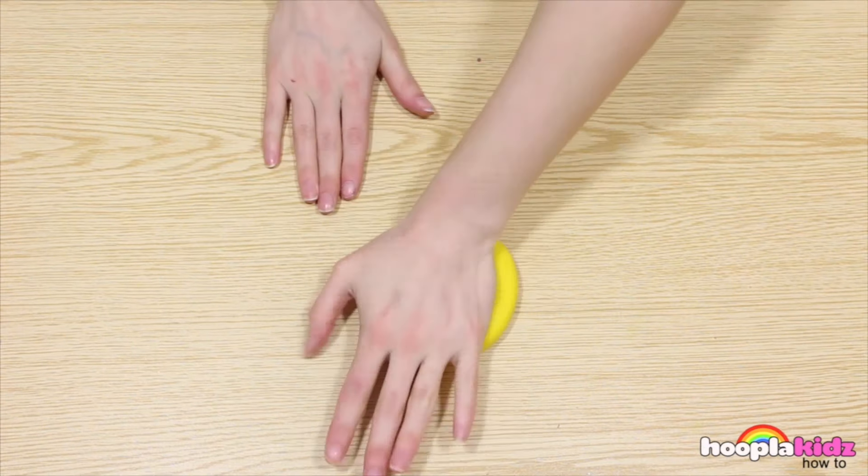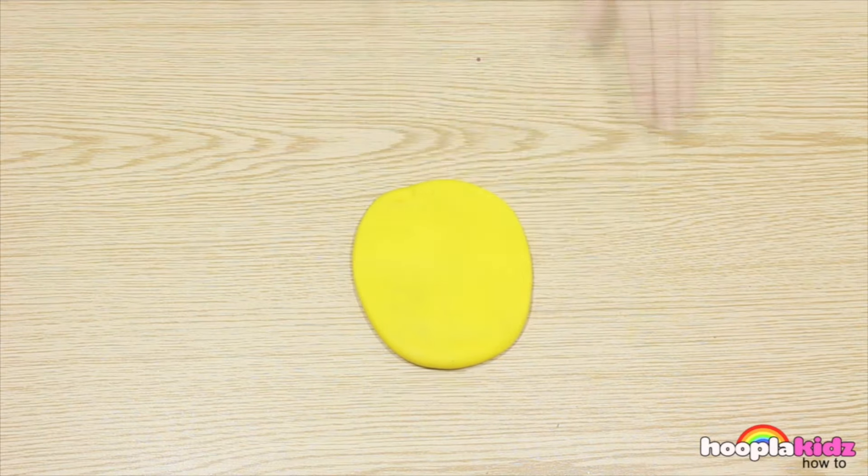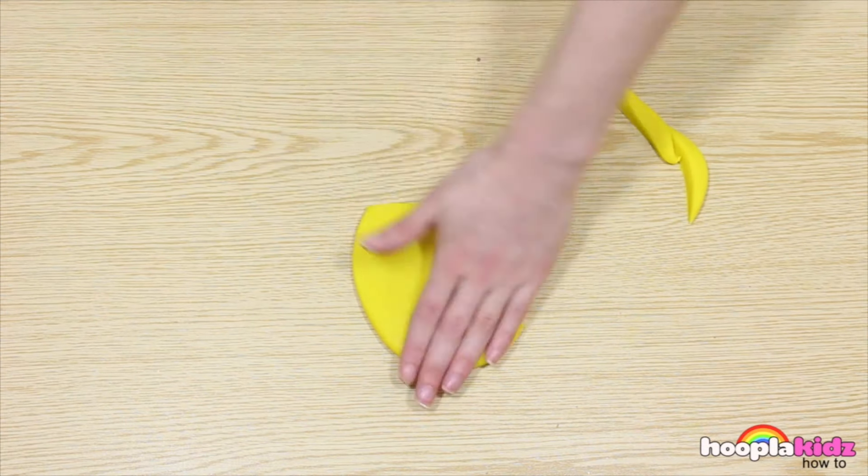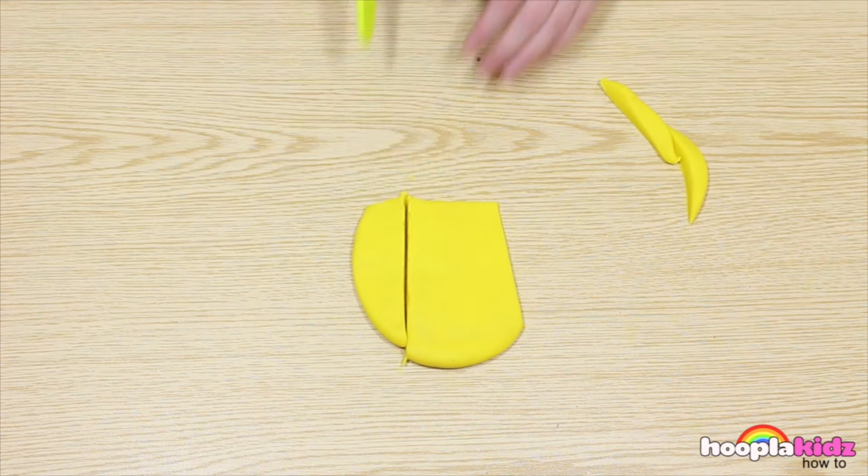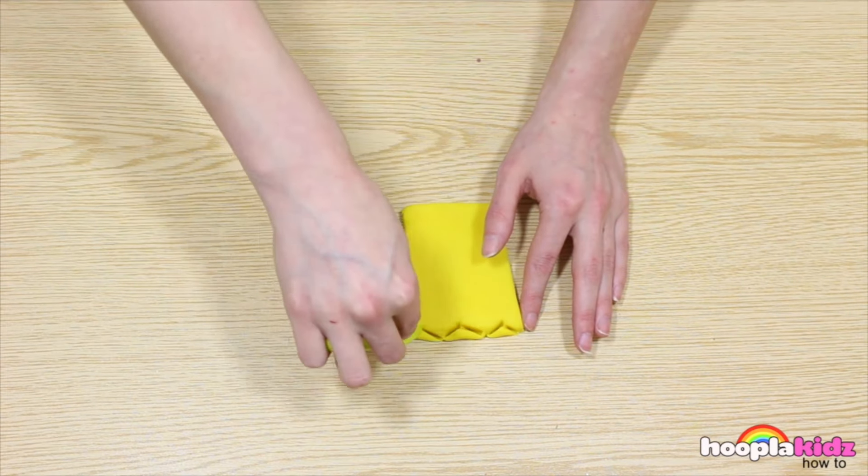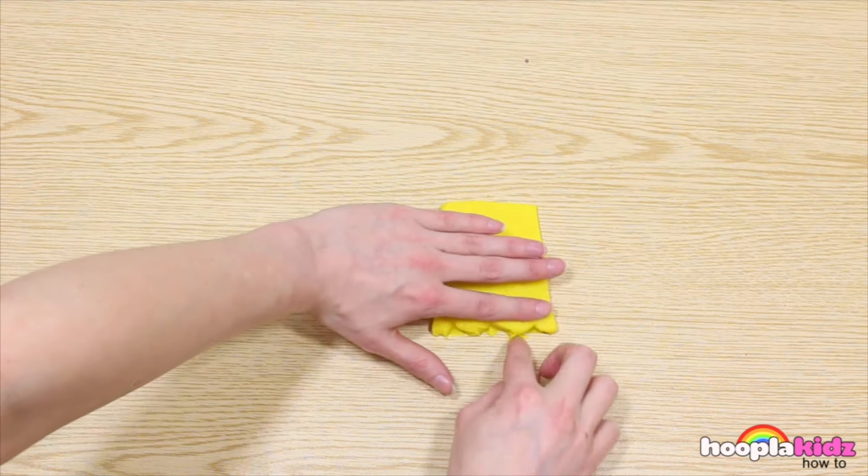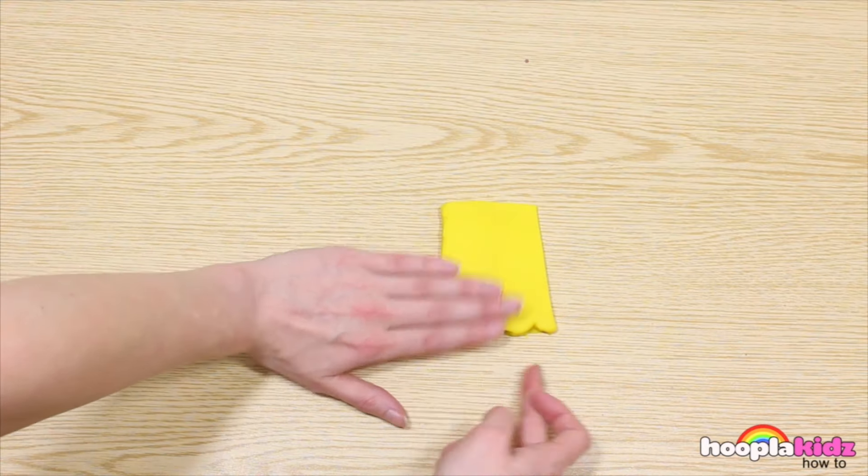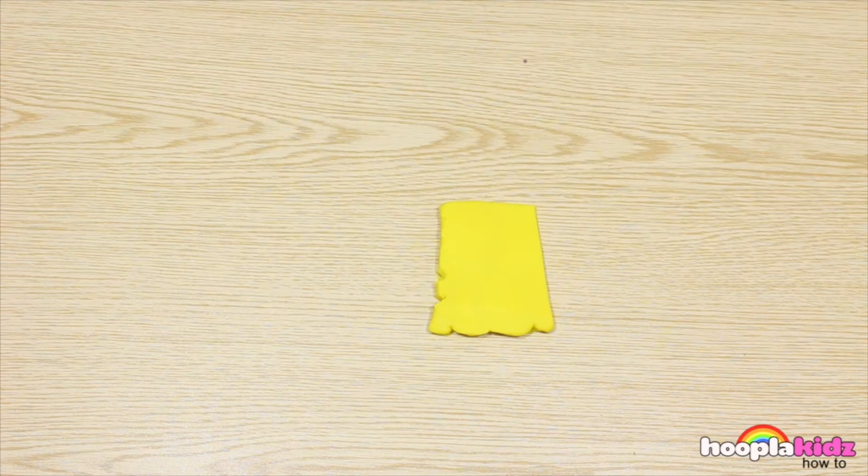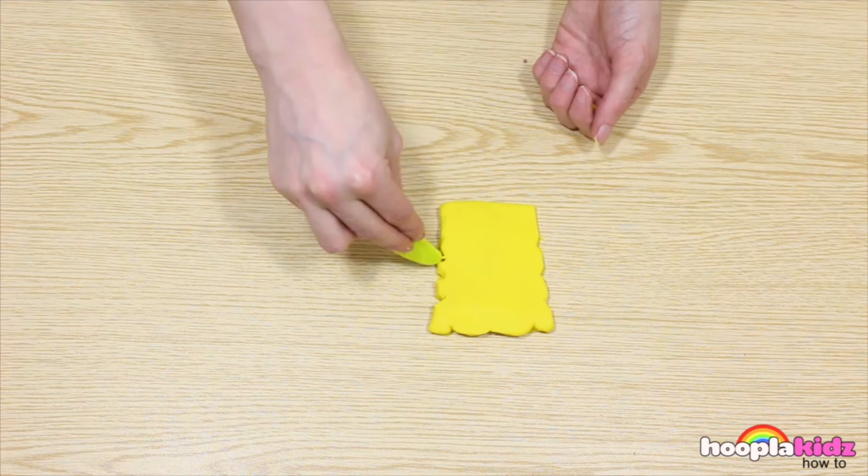The first thing we want to do is take our yellow Play-Doh, of course because SpongeBob's yellow. We're going to roll it out and cut the rectangle of SpongeBob's body. We then want to cut off a zigzag at the top just to add texture. He is a sponge after all. We're going to do the same at the sides but much smaller. This definitely makes him look like a sponge.